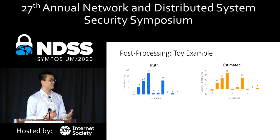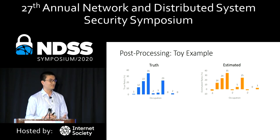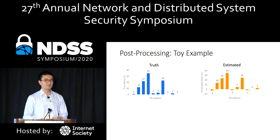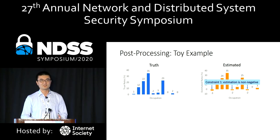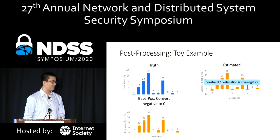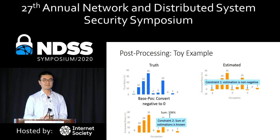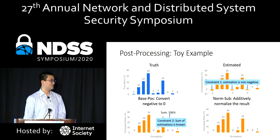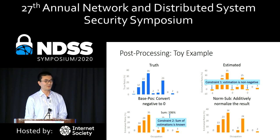This slide shows a toy example of how these two methods work. The top-left figure is the ground truth or true distribution, and the top-right one is the LDP estimation. Because LDP introduces noise, some estimations may be negative, which is impossible. What base-pause does is convert those negative estimations to zero. However, this introduces another inconsistency: the sum of the estimations becomes inconsistent with what we expect — in this case, the sum is 106. To overcome this, norm-sub additively normalizes the result, subtracting one from each of the positive estimations.